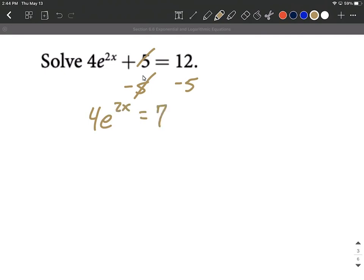So we have 4 e raised to the 2x equals 12 minus 5 makes 7. Then getting that e to the power all by itself, we need to get rid of the 4 next. So we'll divide both sides by 4. E to the 2x equals 7 fourths.